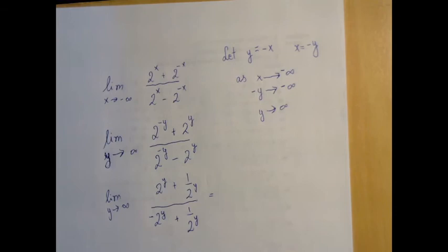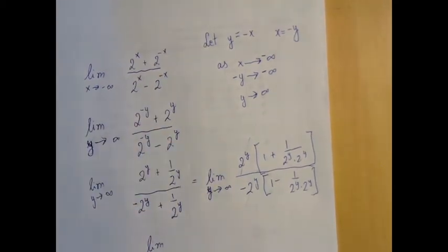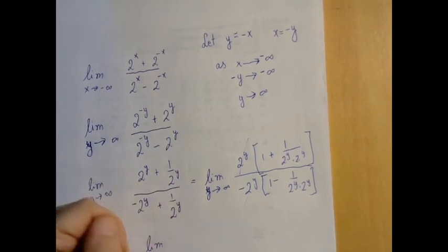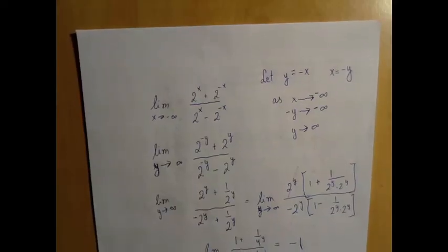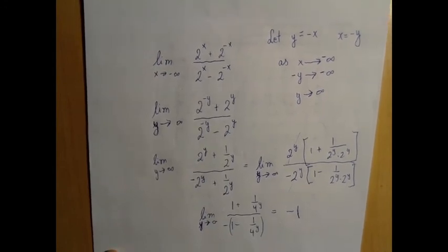So now we're going to factor out what matters. From here it's the same, we already have solved this problem. So again, we factor out what matters, and then we have cancellation. So we have the limit as y approaches infinity of 1 plus 1 over 4 to the y divided by 1 minus 1 over 4 to the y. As y approaches infinity, 1 over 4 to the y approaches 0, so we got our limit to be negative 1.